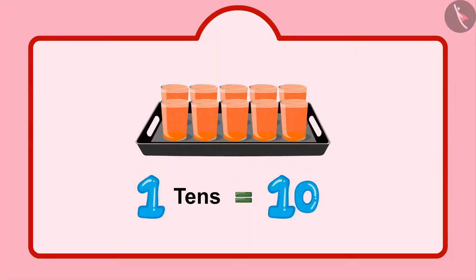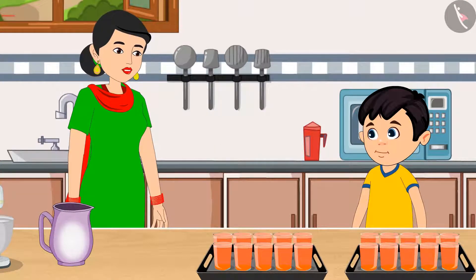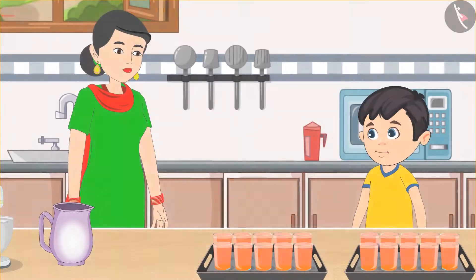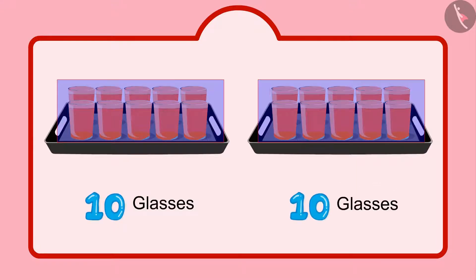Yes mommy, I remember. Now if we put one more glass in this plate, it will be a group of ten glasses and we call it one ten. You are absolutely right, Chotu. Here you go, your sherbet is ready. Children, can you tell me how many glasses of sherbet Chotu's mother has made? Yes, you are right — Chotu has two plates of ten sherbet each.